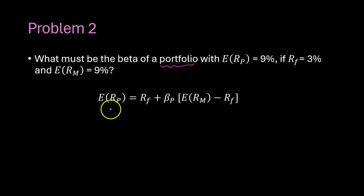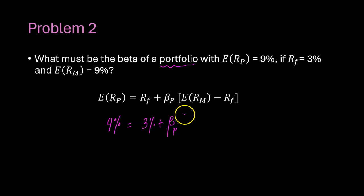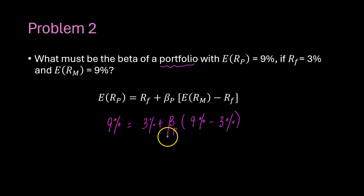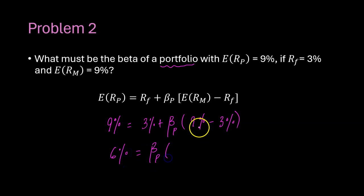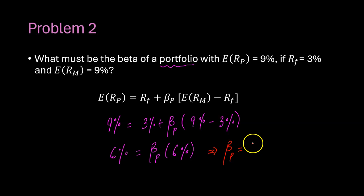We have all the inputs. The expected return on the portfolio is 9%, the risk-free rate is 3%, and the expected return on the market is 9%. We are trying to find the beta of the portfolio. Subtracting 3% from 9% gives 6% on the left side, and 9% minus 3% gives 6% on the right side as well. So the beta of the portfolio is 6% divided by 6%, which equals 1.